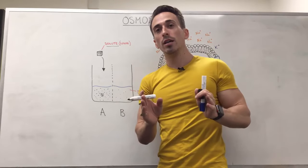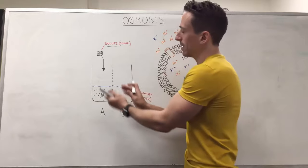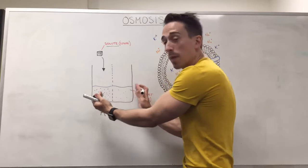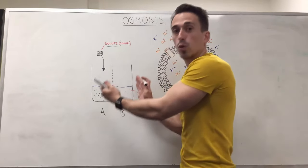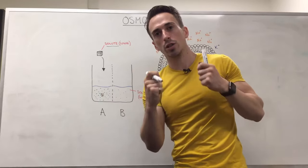Now in biology we hate this. Biology hates the fact that there's two sides of a membrane that is unequal in concentration. It will always try and balance out the concentration.